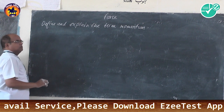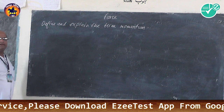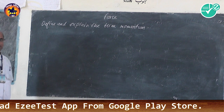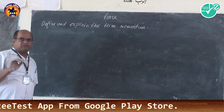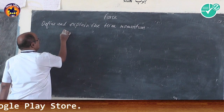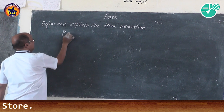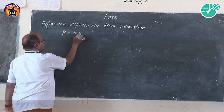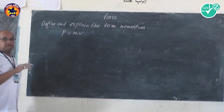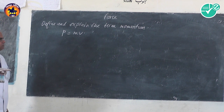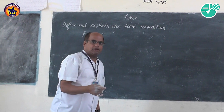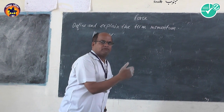Momentum is defined as the product of the mass of the body and its velocity. It is denoted by P, so momentum P is equal to mass of the body into velocity of the body. It is a vector quantity and the direction of momentum is the same as that of the velocity.